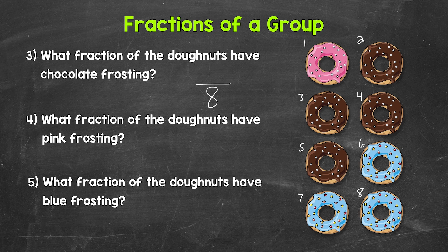Now we need the numerator. That's going to be the number of donuts that have chocolate frosting. We have 1, 2, 3, 4. So 4 is our numerator. 4 out of the 8 donuts have chocolate frosting. So our fraction is 4 eighths.